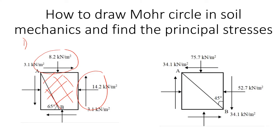We also have stresses acting at the bottom and on the left hand side of the cell element, but typically we don't write the values of these stresses because they are the same, just acting in the opposite direction. For example, at the bottom the normal stress will be 8.2 and the shear stress will be 3.1, acting in the opposite direction compared to the stresses on the top.